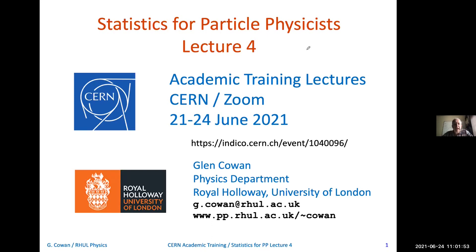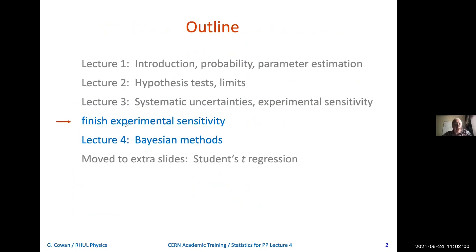Good morning, everyone. For this fourth lecture, I had intended in lecture three to have a discussion of experimental sensitivity. We didn't get to that, but that's quite important, so that's what I want to finish up today. Then we'll go on, and I want to show an example which contrasts some frequentist methods and Bayesian methods. It will serve, at least for the frequentist part, to review and consolidate some of the things discussed in the previous days, and then also to introduce how this would be done in a Bayesian approach. What I've had to move to the extra slides is a brief discussion of student's t regression — that's slightly more exotic anyway. I invite you to look at that in the extra slides.